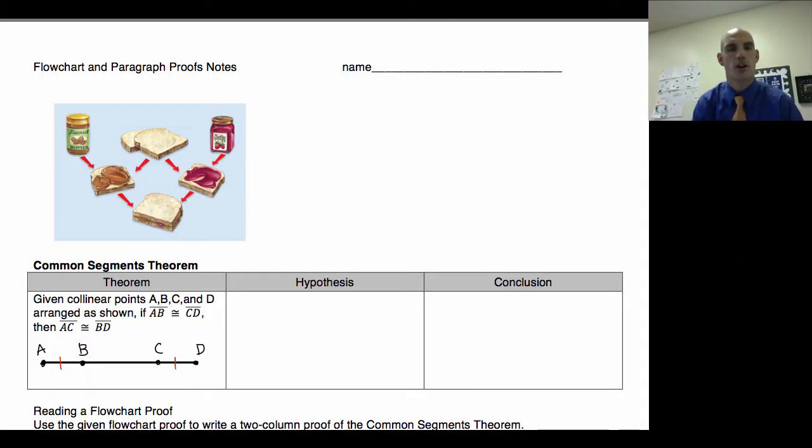Welcome back. Today we're going to talk about flowchart and paragraph proofs. The benefit of flowchart and paragraph proofs is it allows us to outline our thoughts before we move into the formal two-column proof.